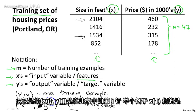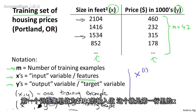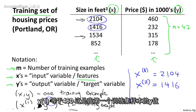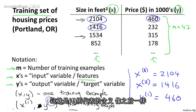So for example, x^(1) refers to the input value from the first training example — that's 2104. x^(2) will be equal to 1416. And y^(1) will be equal to 460, because that's the y value for my first training example.